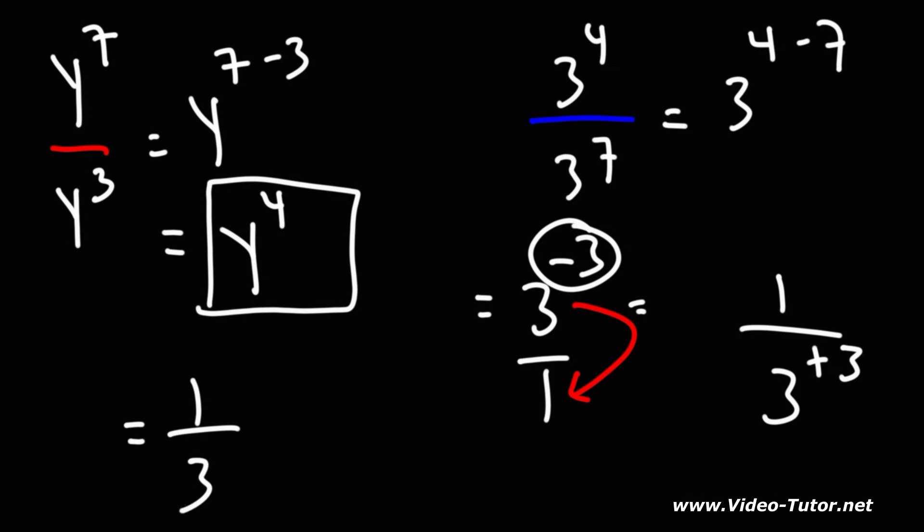So what we have is 1 over 3 to the 3rd. We could leave that answer like that, or we could expand it. 3 to the 3rd is 3 times 3 times 3. And if you multiply three 3s together, you get 27. So the final answer is 1 over 27.